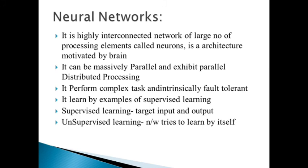Neural networks have intrinsic fault tolerance capability - if any particular neuron fails, its work will be taken over by another neuron. They learn by themselves through examples. In supervised learning, we have a labeled input with a target input and target output. In unsupervised learning, the network tries to learn by itself.